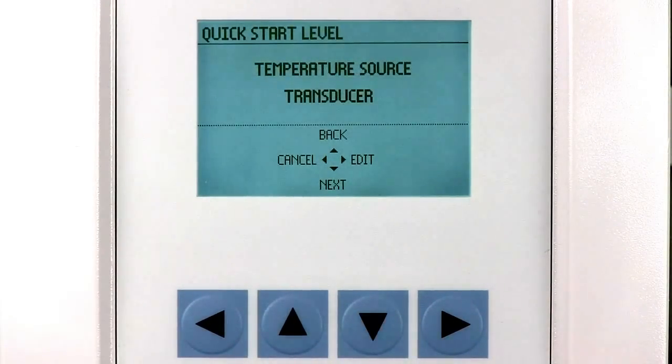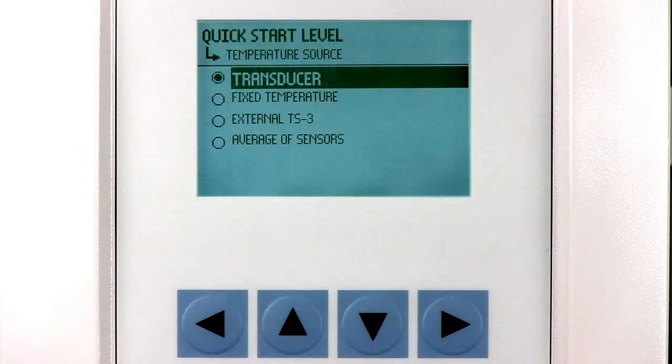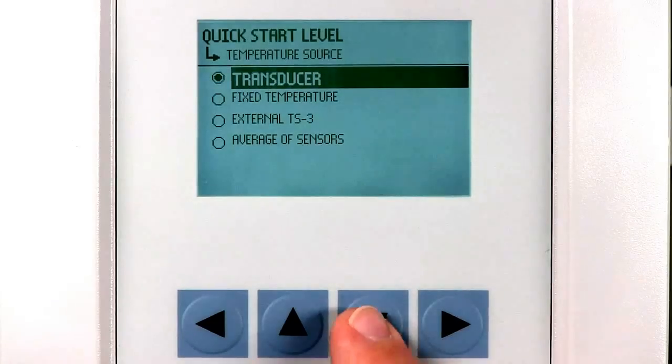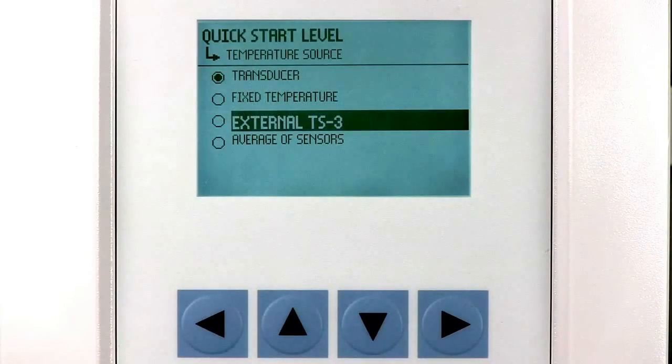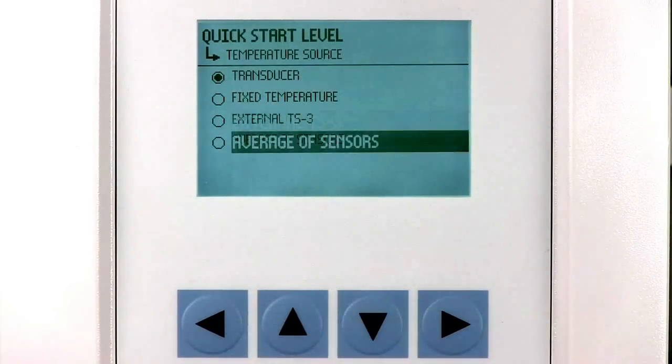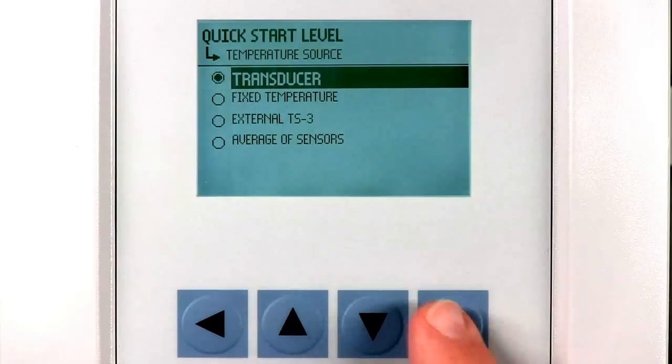The LUT400 uses a temperature sensor to automatically adjust for speed of sound changes within the measuring atmosphere. We can use the sensor built into the Echomax transducer or an external TS3 temperature sensor. Another option is the average of both transducer temperature sensor and the TS3. We will use the transducer selection for our application.